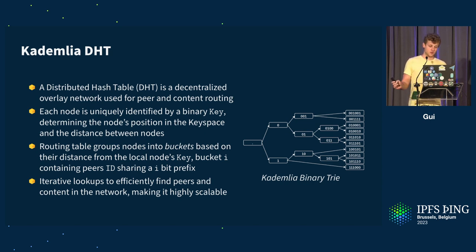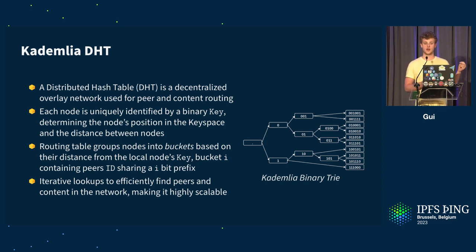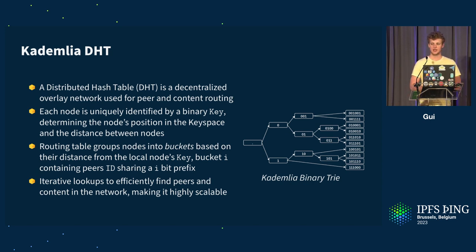With this structure, we can do iterative lookups. If I'm looking for a specific key, I look in my routing table for the closest peers to that key. I contact the closest peer I know, which tells me about another peer closer to the key, and eventually I find the content I'm looking for. That's how routing works in the Kademlia DHT.